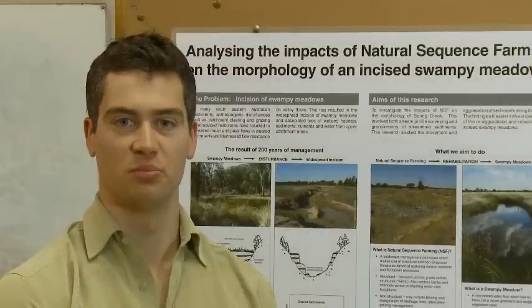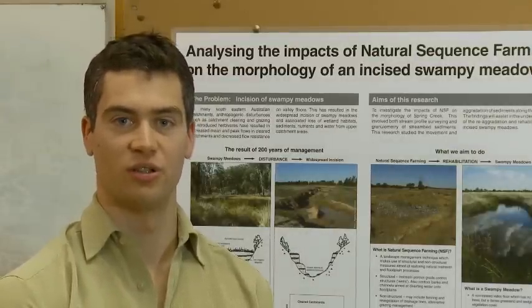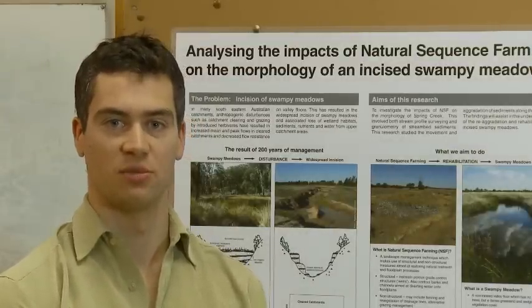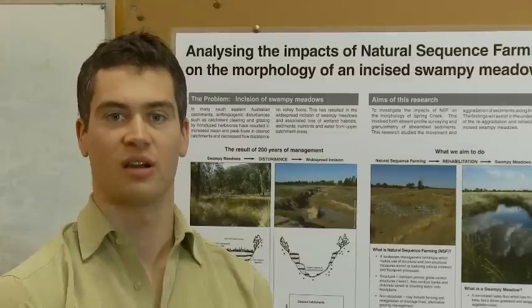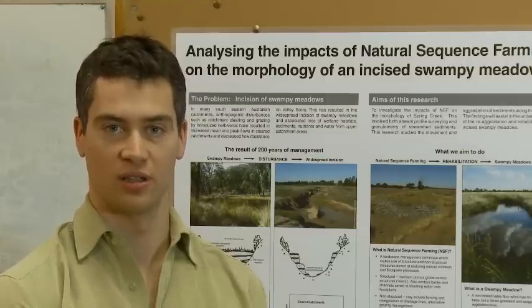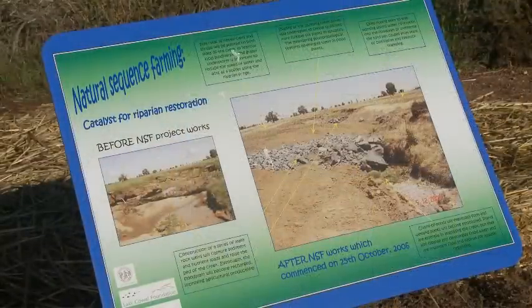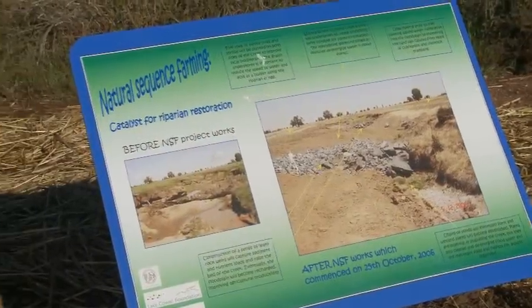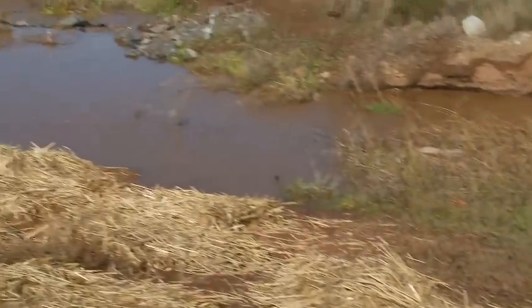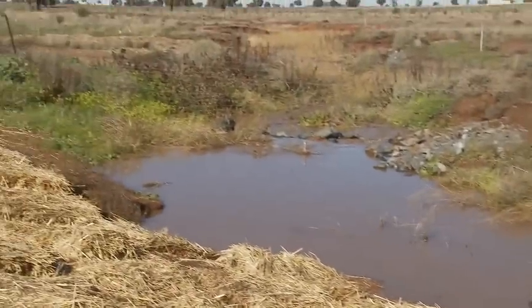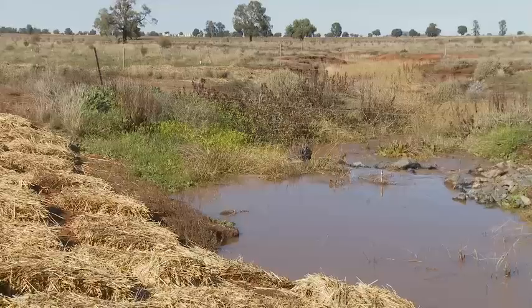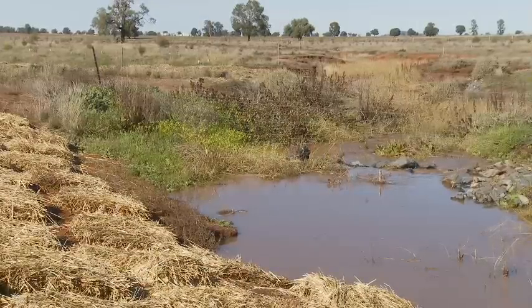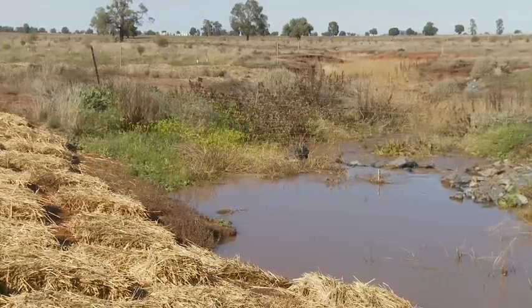To provide some brief findings: natural sequence farming structures are encouraging the aggregation of Spring Creek, bringing the level back towards the former floodplain. However, it will be a very lengthy process. I've estimated that in heavily incised areas this could take over 200 years behind weirs, and in areas without weirs, over 2,000 years, based on current aggregation rates.